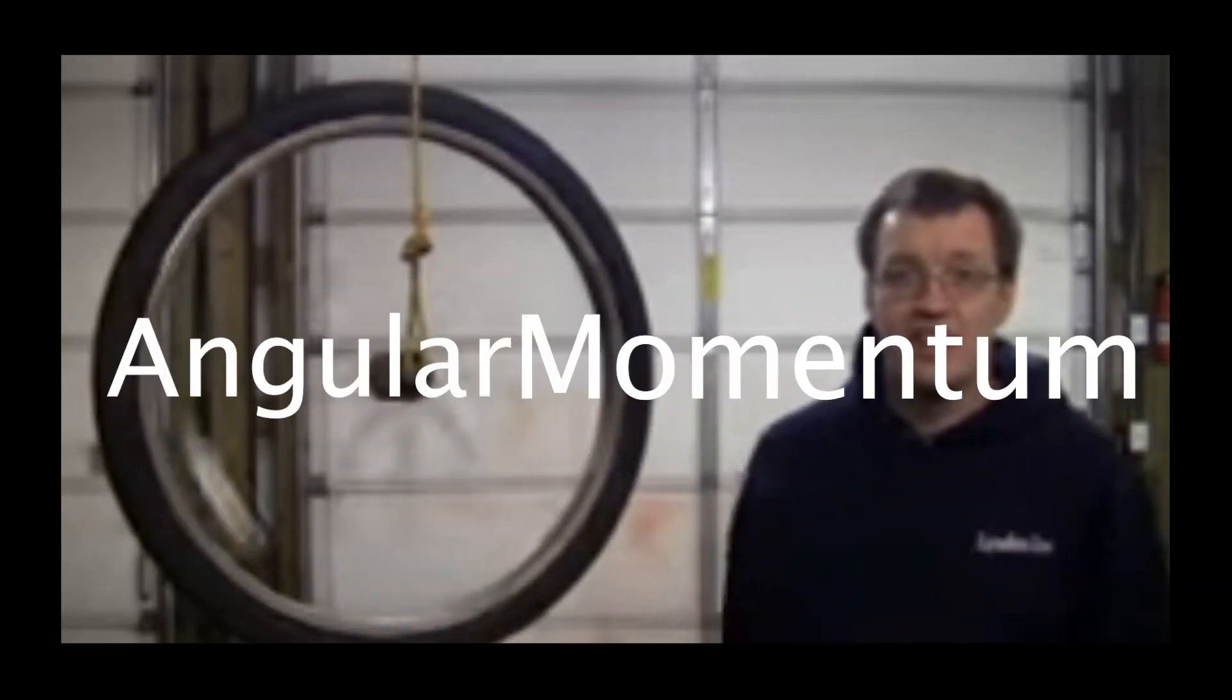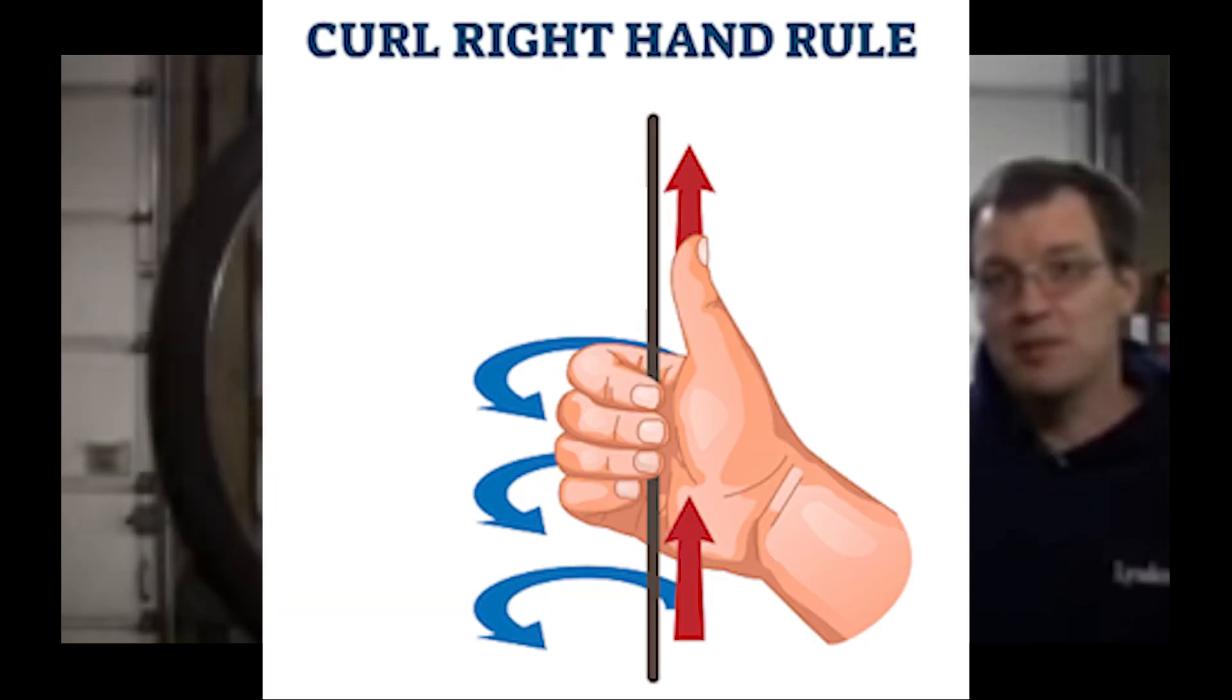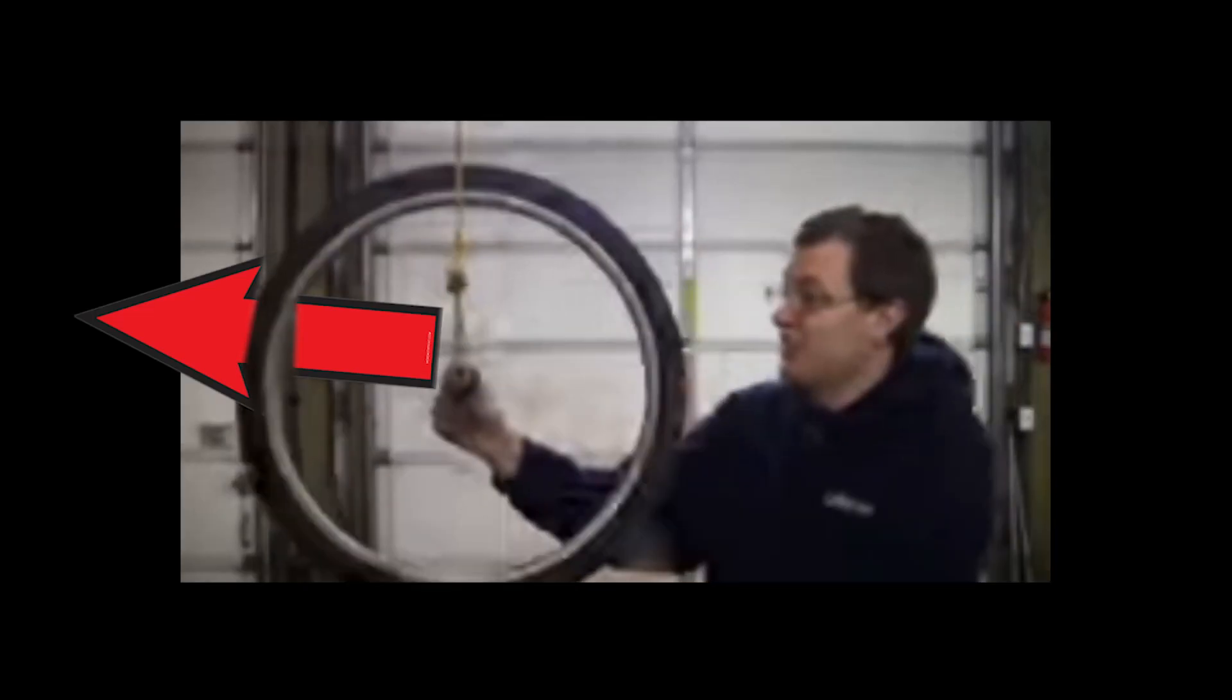So when he spins up the wheel, he introduces an angular momentum into it, and due to the right-hand rule, has a vector that comes out this way.